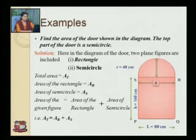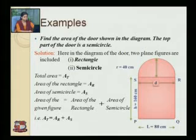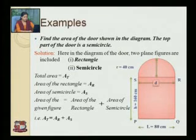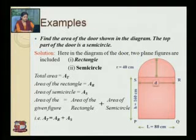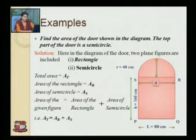Next example: Find the area of the door shown in the diagram. The top part of the door is a semicircle, so the door is a combination of two figures: first is a rectangle, and second is a semicircle. To find the total area of the given diagram, we have to first find out the area of the rectangle and the area of the semicircle.